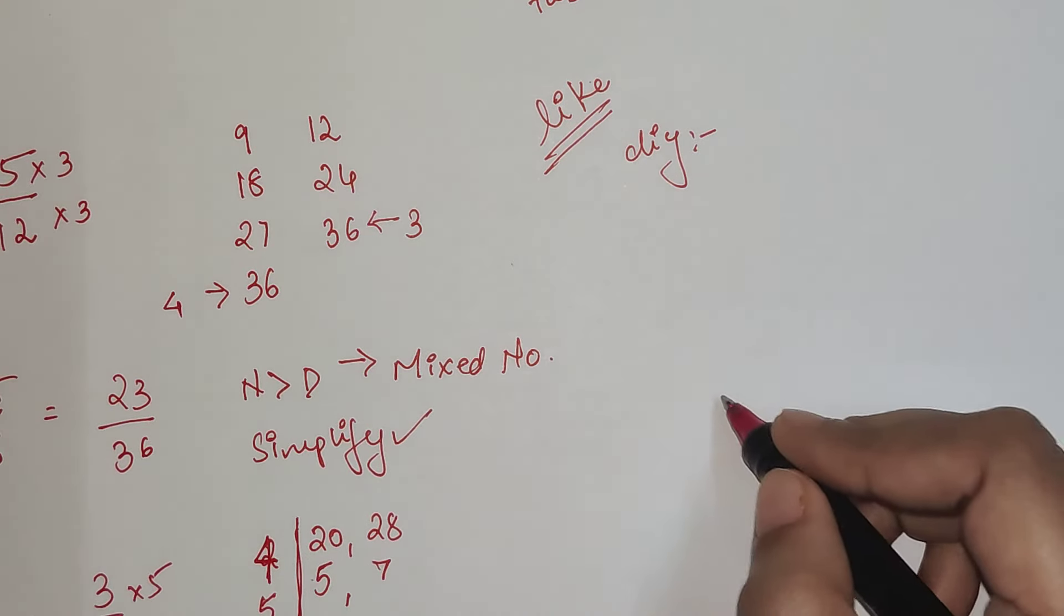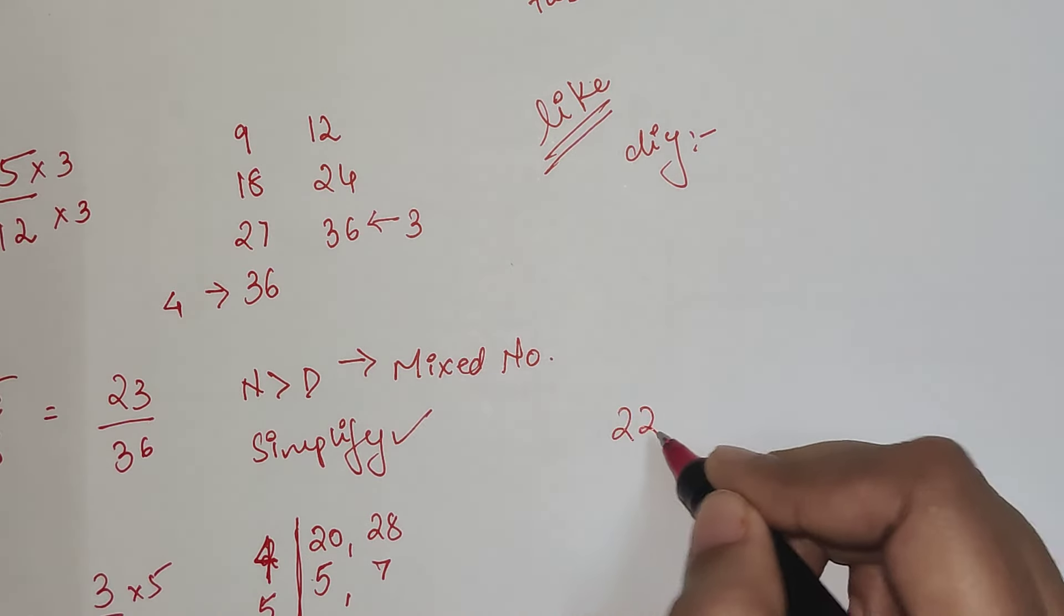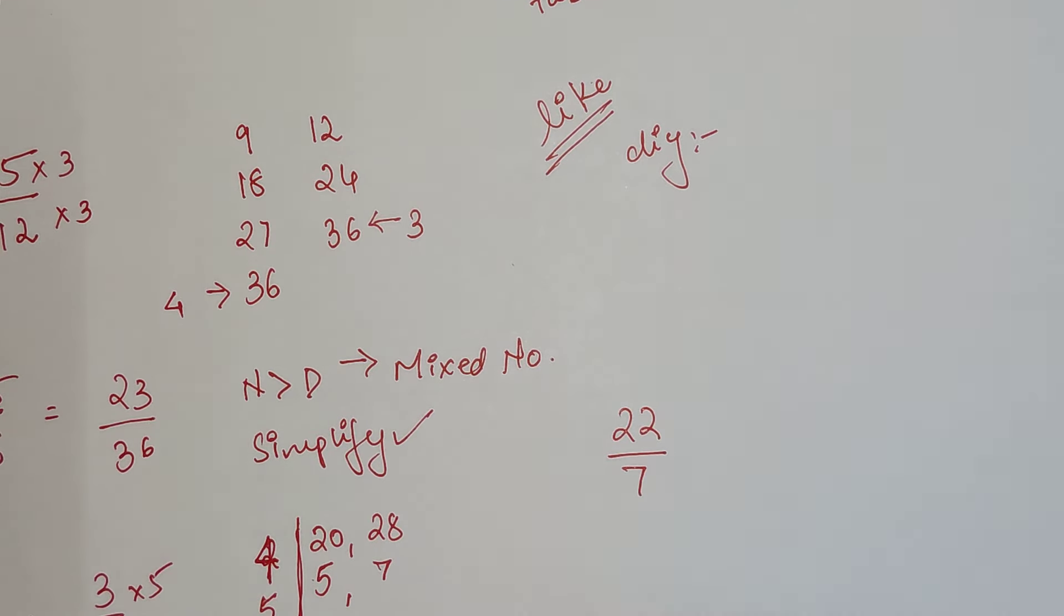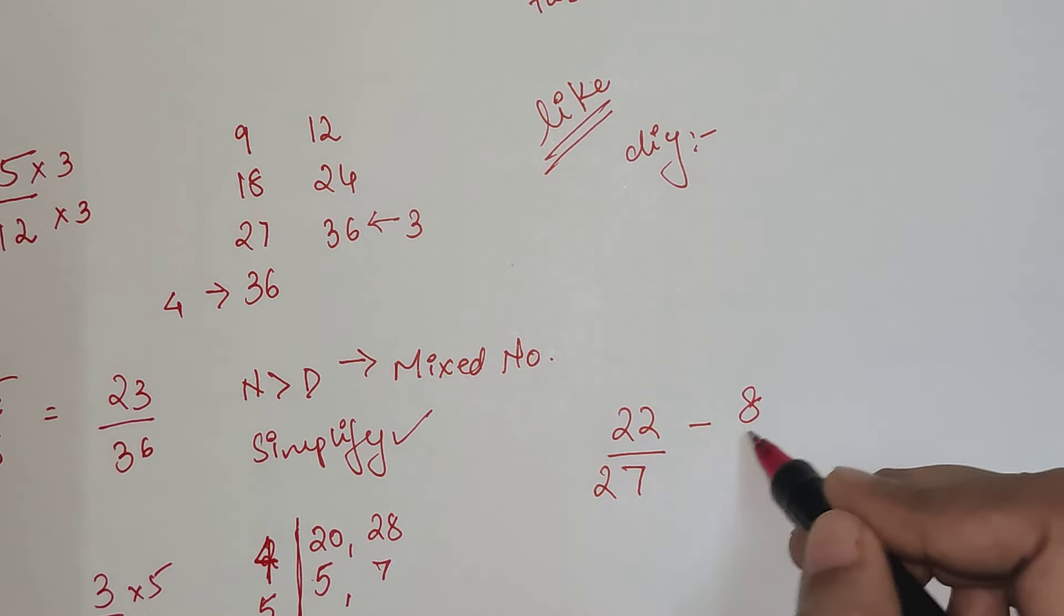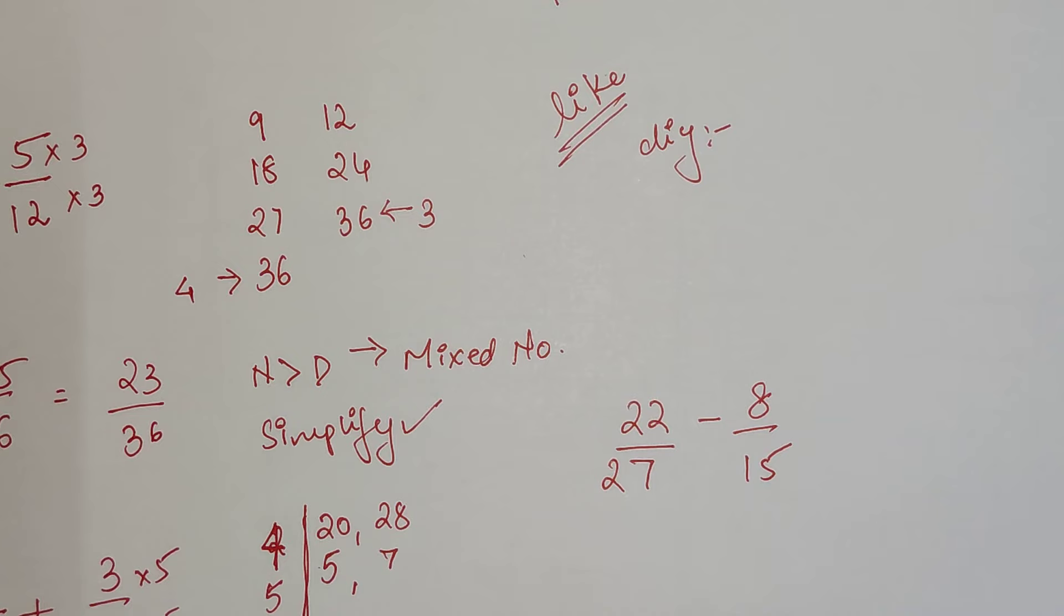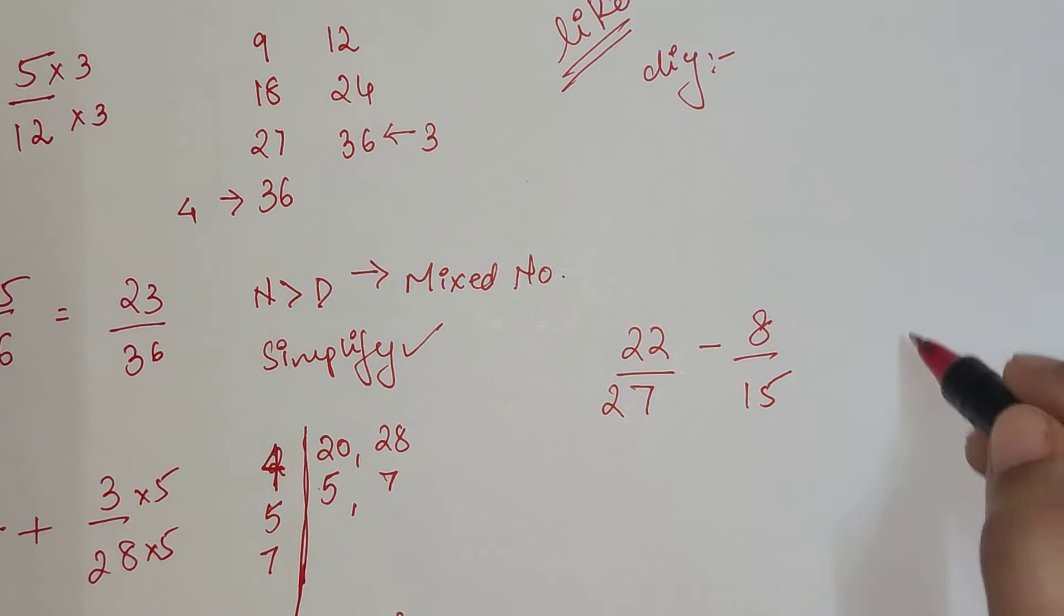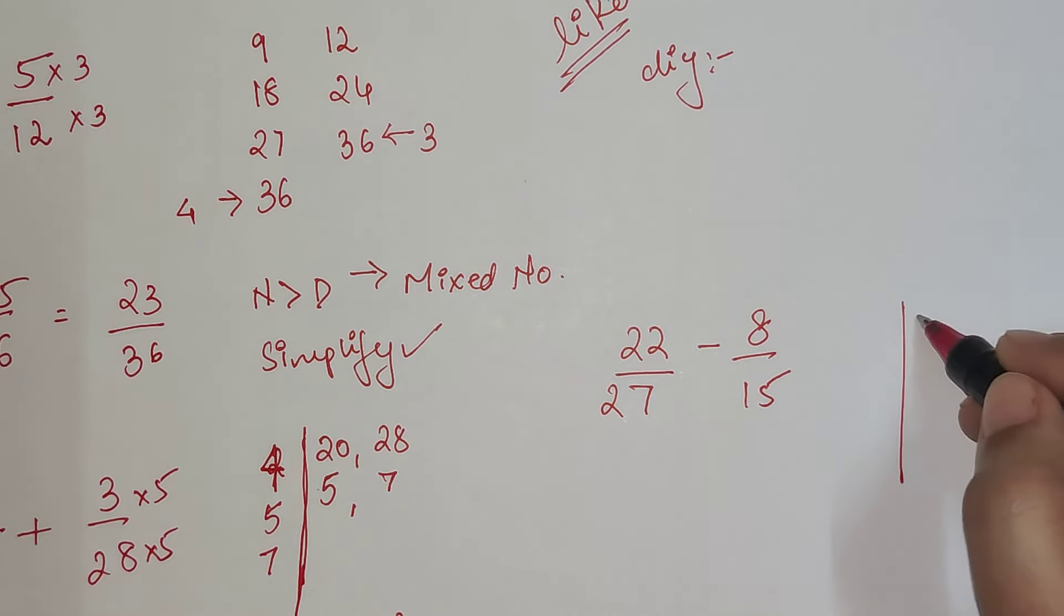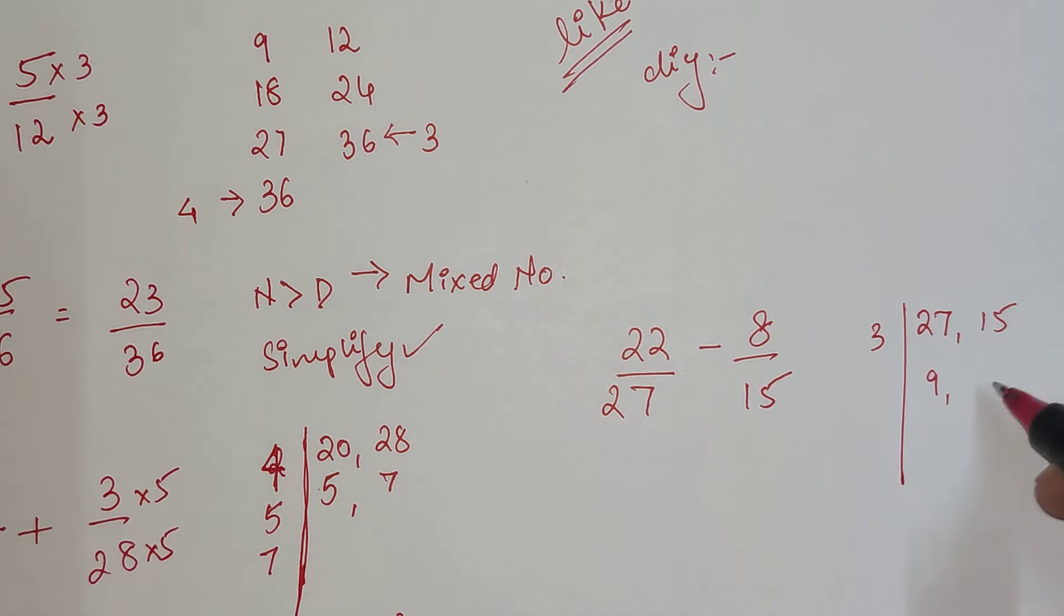What if we have 22 upon 27 minus 8 upon 15? So here again we will do this with this method. So 27 and 15: 3's, 9's, 5's.